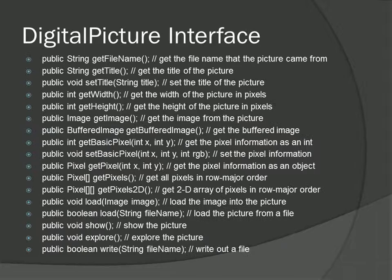Here's the short version of what's in that DigitalPicture interface file, so you know what's accessible. Anything that implements a DigitalPicture will have these methods available. We're specifically going to be looking at things like getting 2D arrays of pixels, setting pixels, or querying a single pixel. This is where we're going to live and breathe for the rest of this unit.